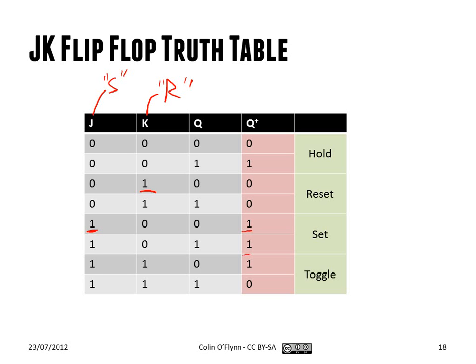The difference is that if you tie J and K to 1, rather than being undefined, the output just toggles. So if the previous state was 0, it becomes 1. If the previous state was 1, it becomes 0. And we still have the hold state when J and K are both 0.